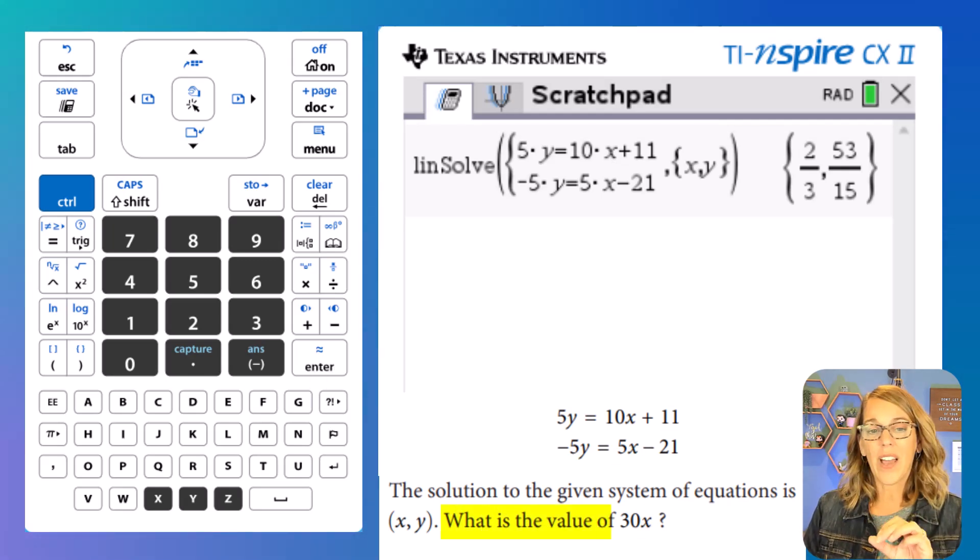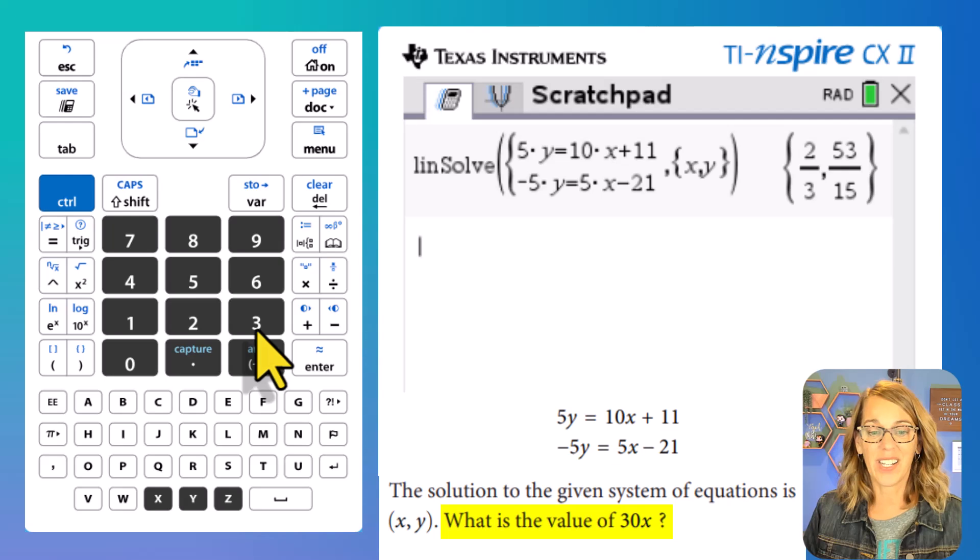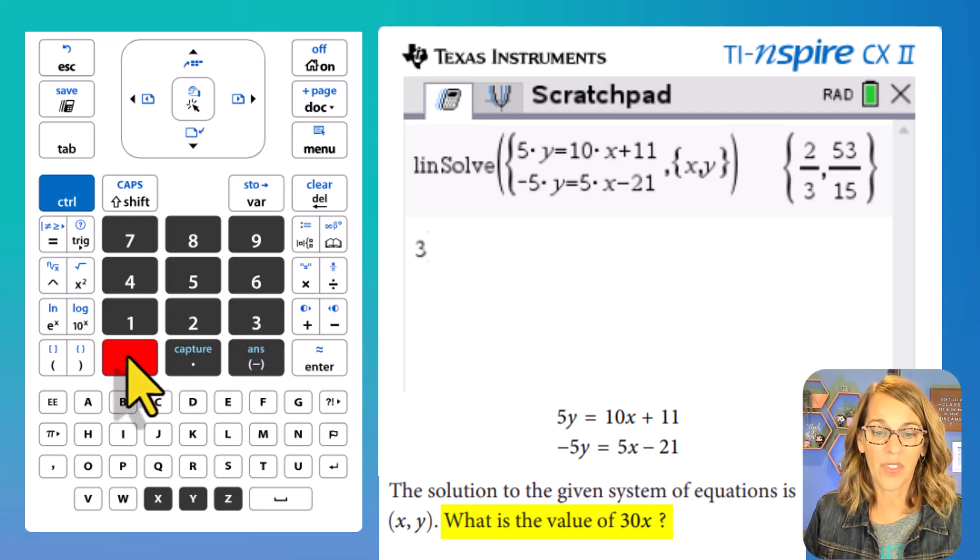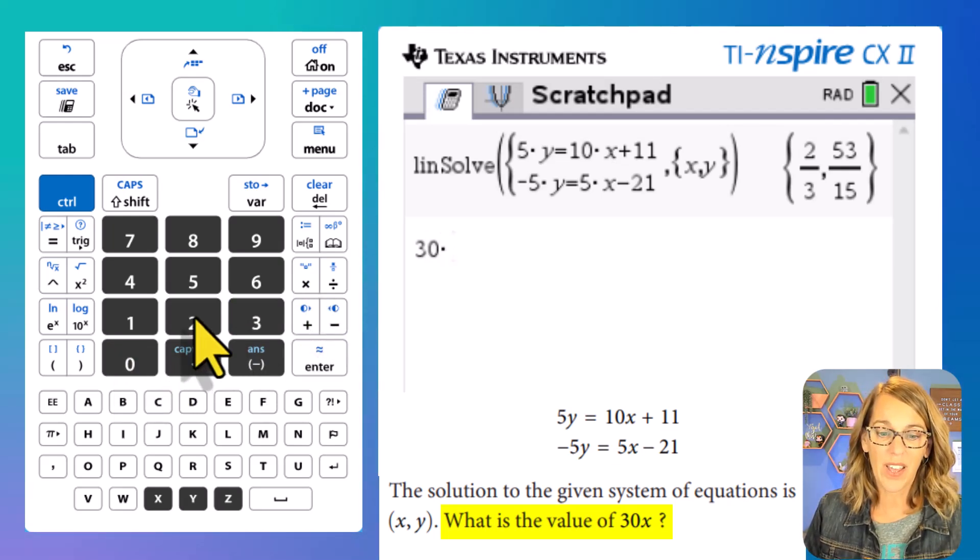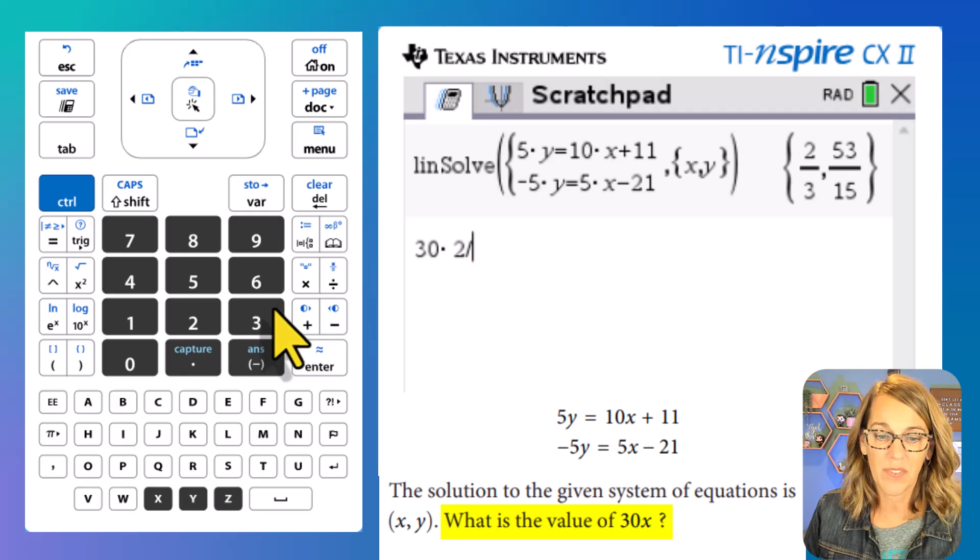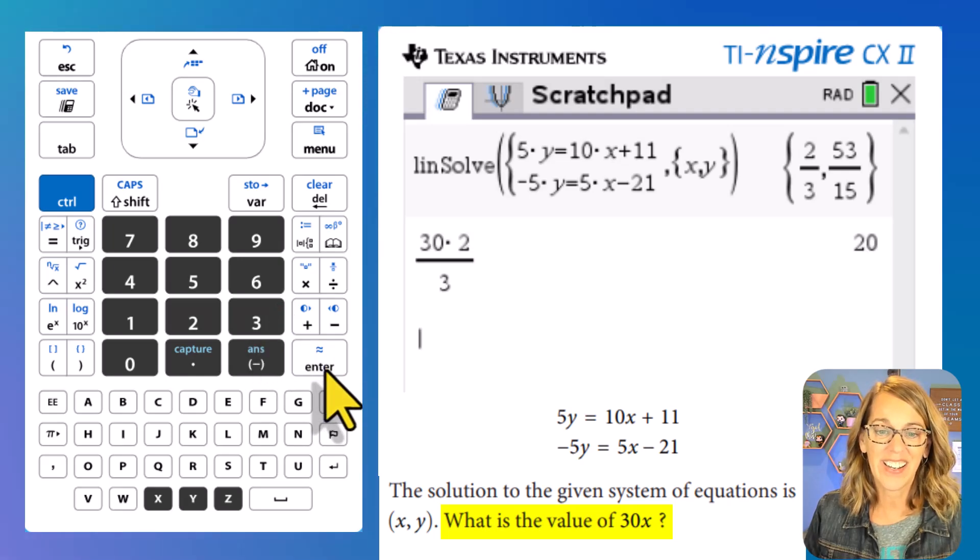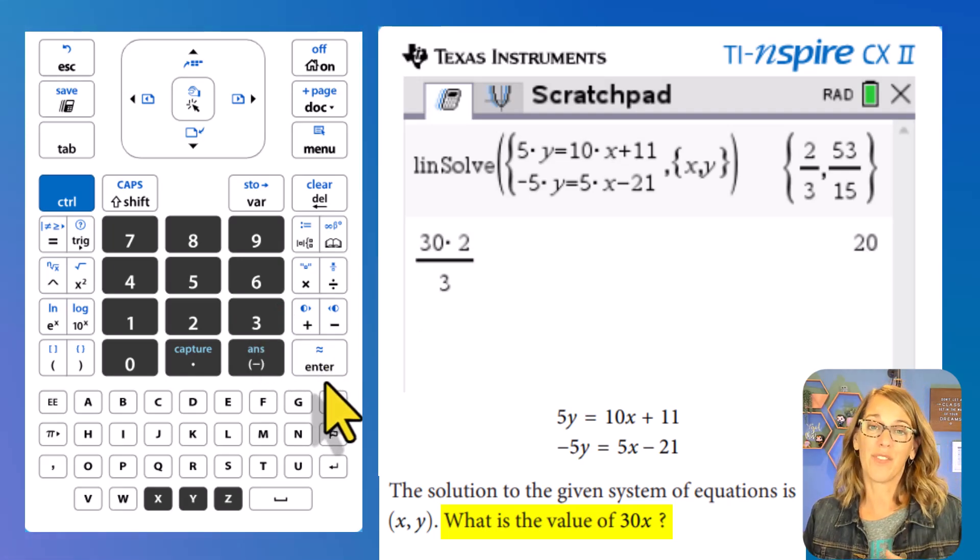Now it says, what is the value of 30X? So to get the value of 30X, I'm going to go 30 times my X value, which is 2 divided by 3. And then enter, we've got our answer of 20.